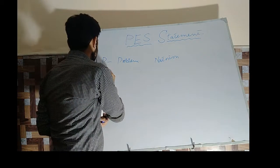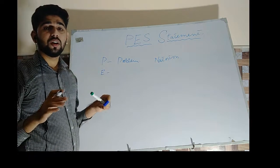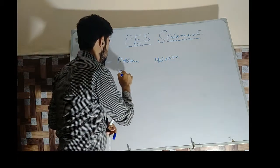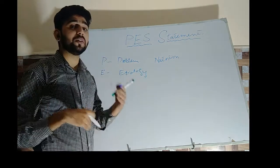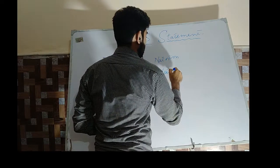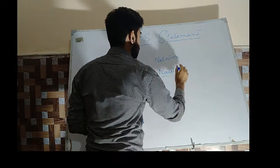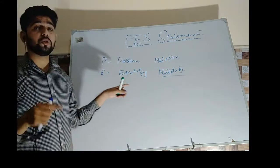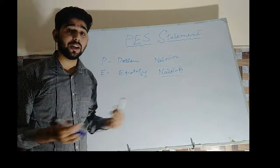The second is E, which is actually etiology — what is the cause of this problem? Your etiology should be related to nutrition. Your primary etiology should be related to nutrition; it also should not be related to a medical problem.